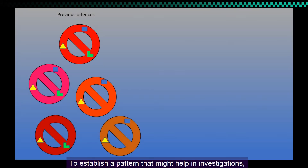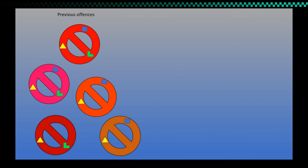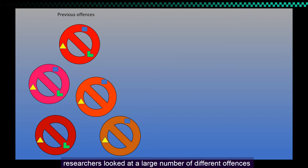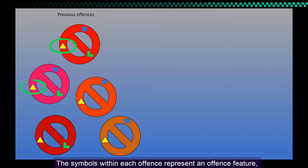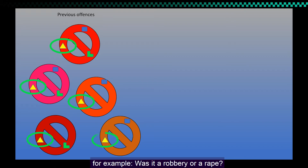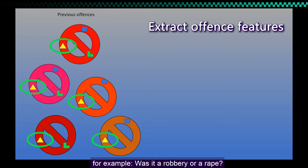Let's work through an example. To establish a pattern that might help in investigations, researchers looked at a large number of different offenses that were already solved. The symbols within each offense represent an offense feature. Was it a robbery or a rape?